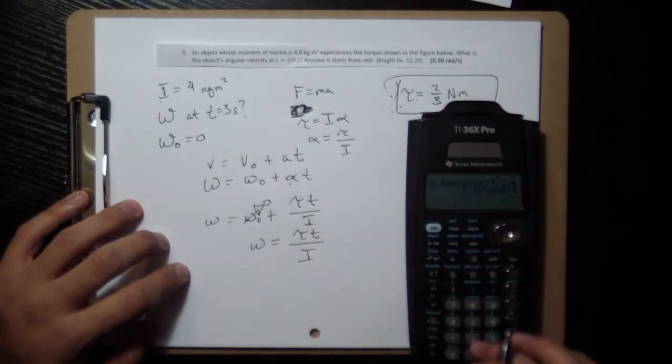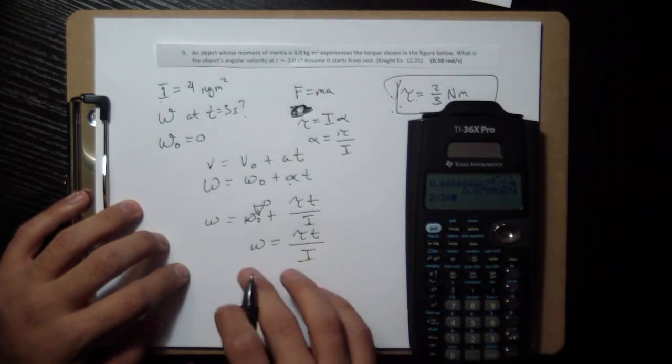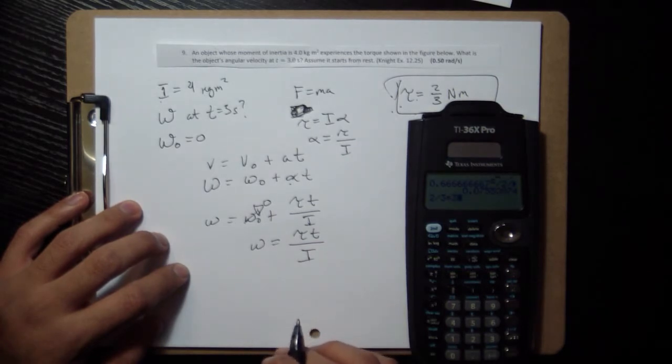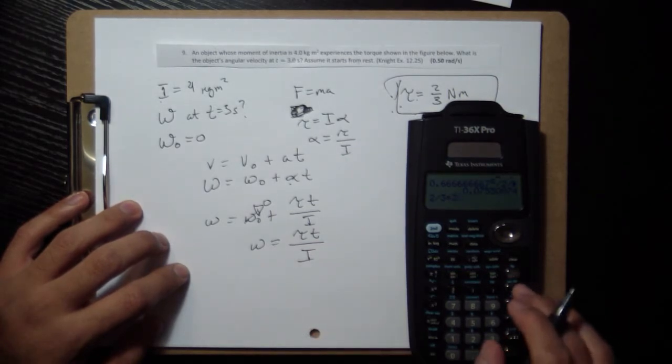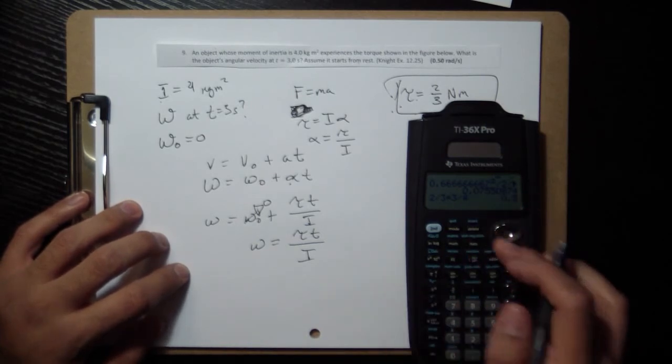So tau is 2 over 3. That's our torque. T is 3 seconds. And our moment of inertia is 4. 2 over 3 times 3 over 4, let me get 0.5.